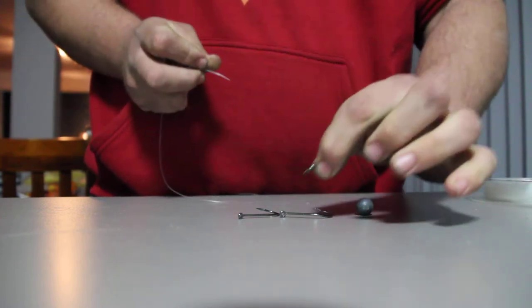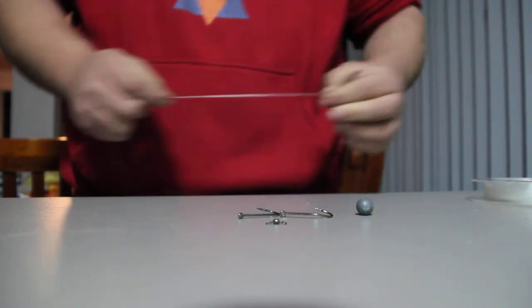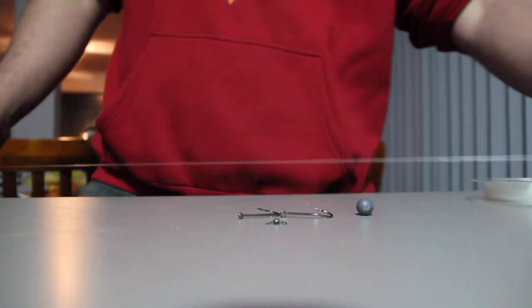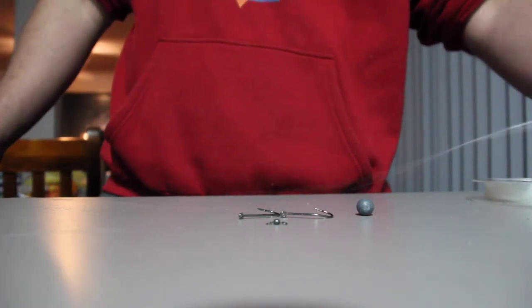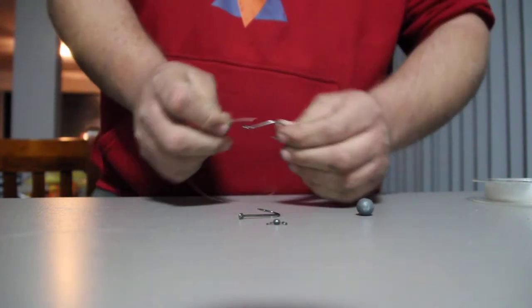And then of course, a small swivel. Now we've got a meter or so, just under a meter of 80lb trace cut, so we'll start with the first hook.